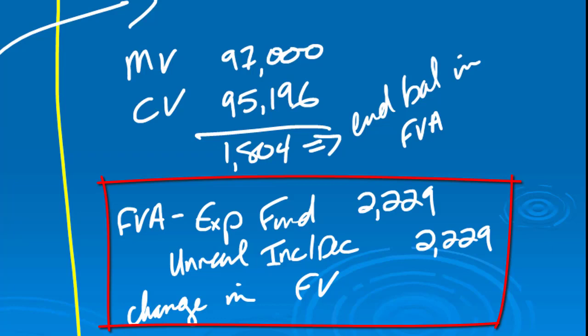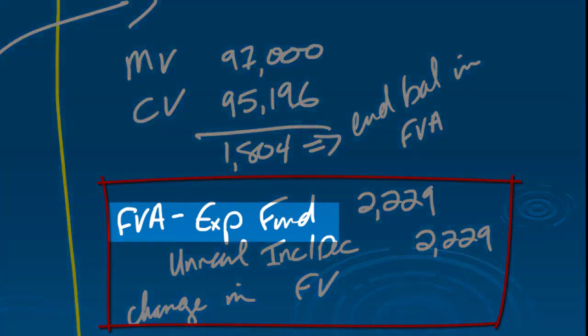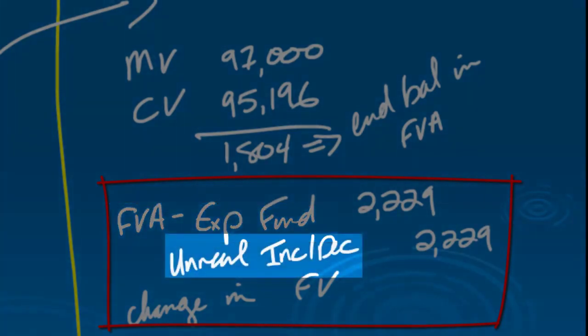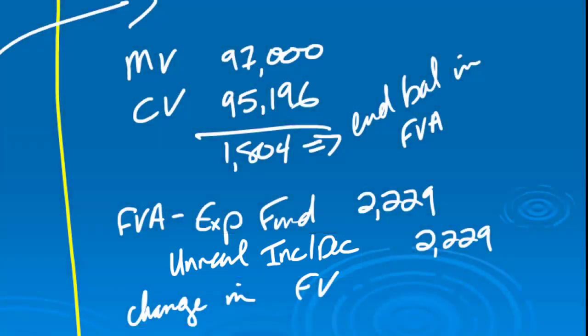Now if this was trading, it would all stay exactly the same. The only difference is I would record my fair value adjustment to trading or to cash equivalents, and then instead of unrealized increase/decrease, it would be an unrealized gain. That's the only difference between the two.